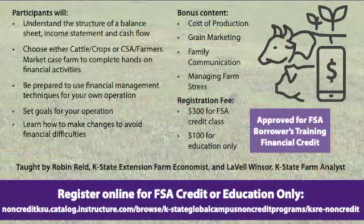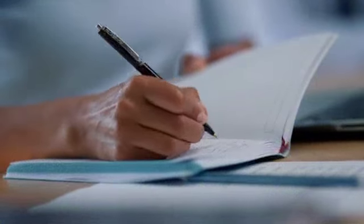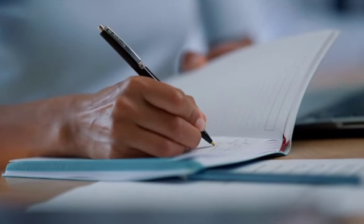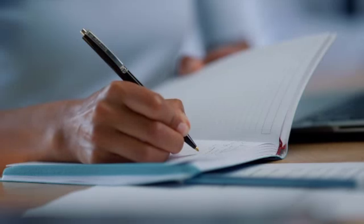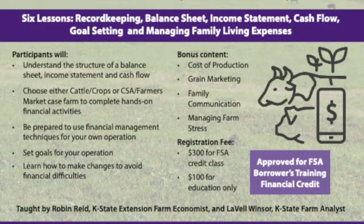There are two ways to take this course. It can be for education only — to hone your skills, learn what your lender is looking for, or pick up tips and tricks to improve your records and use them to make management decisions on your farm. The other option is if you have an FSA or Farm Service Agency loan; this course will fulfill the financial requirement of that FSA loan.